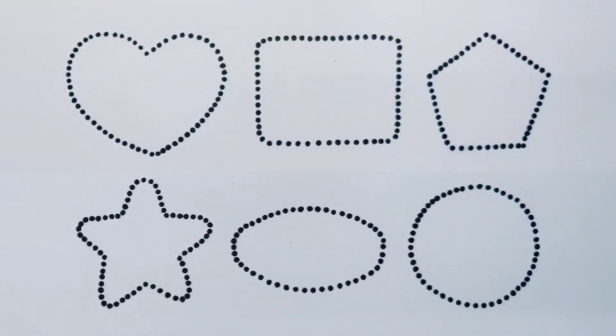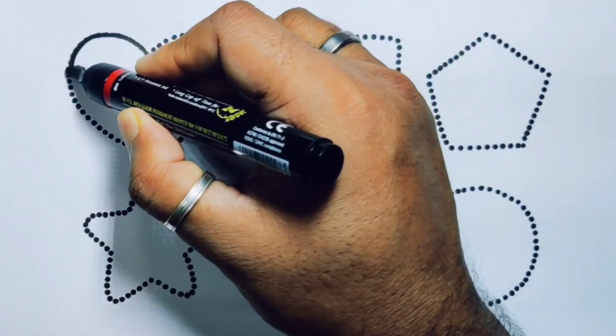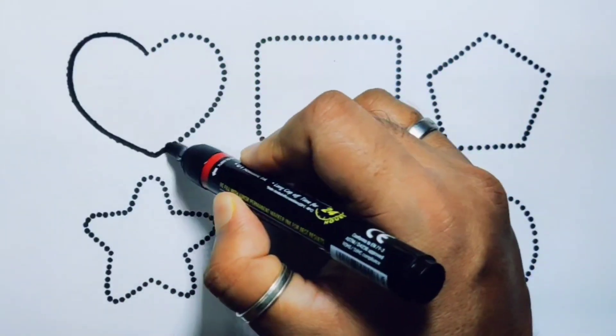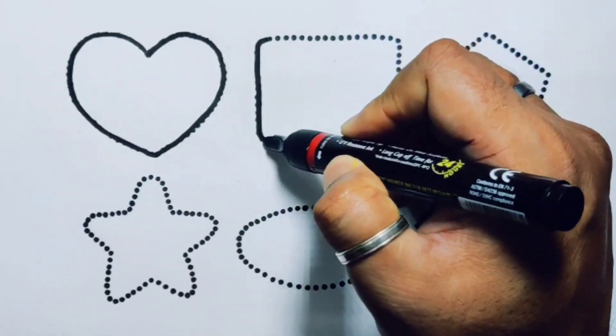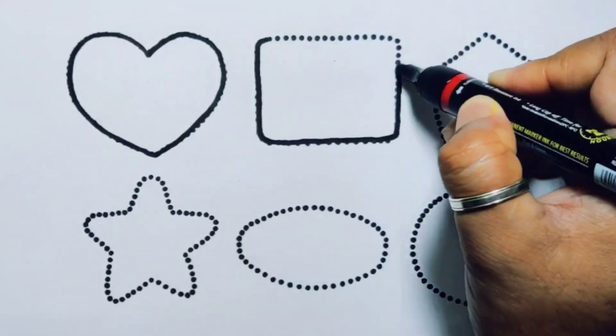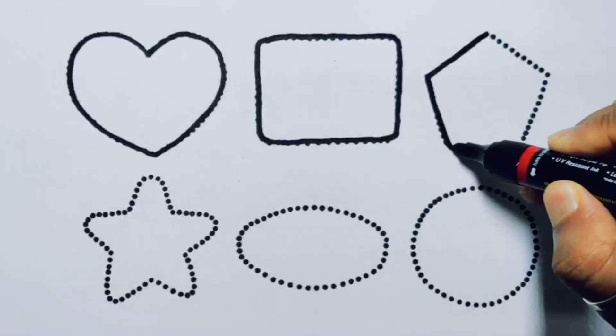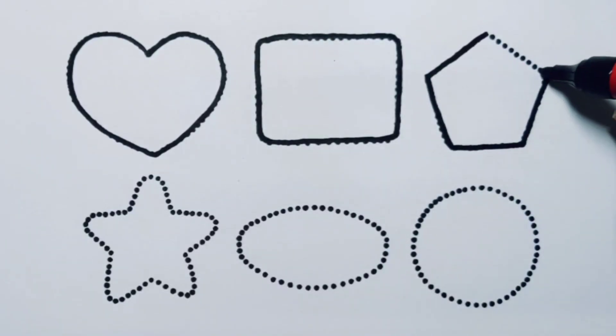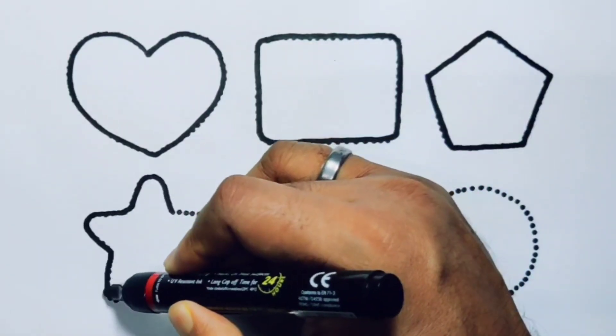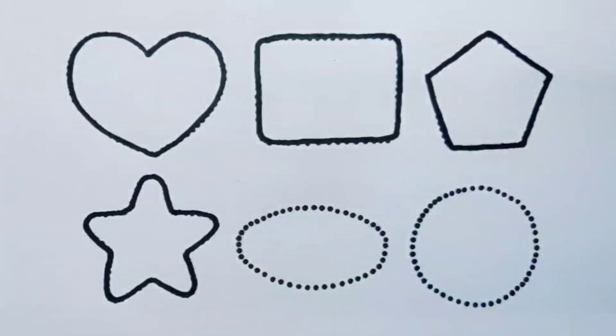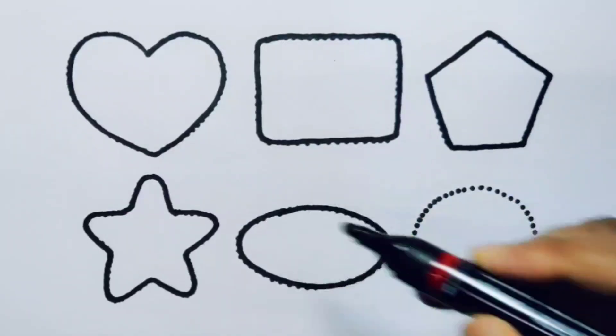First, you're going to draw the shapes. Heart. Second, rectangle. Pentagon. Star, oval, circle.